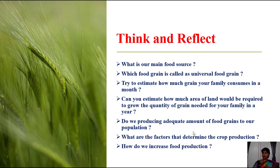Are we producing adequate amounts of food grains for our population? The food grain produced around India is not enough for our Indian people — we are not producing sufficient food grains. If food is not produced in sufficient amounts, it obviously leads to food scarcity. Why are we not able to produce food according to the growth of the population?